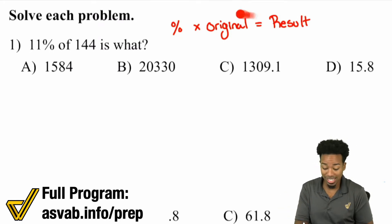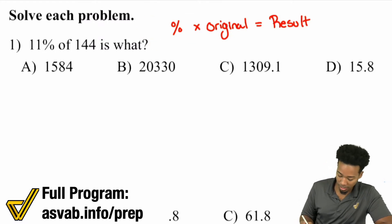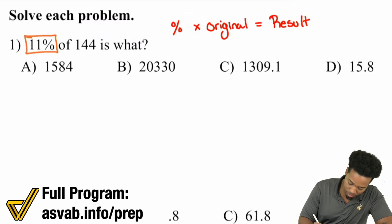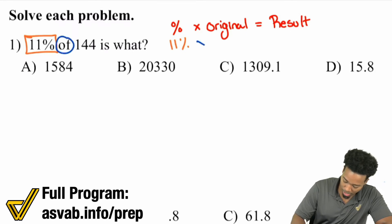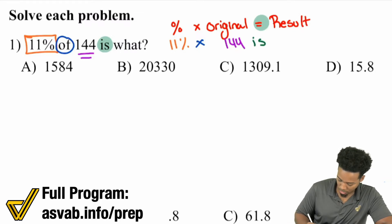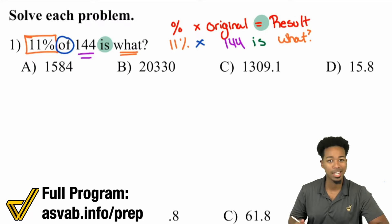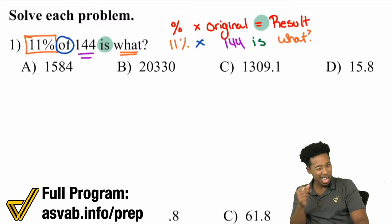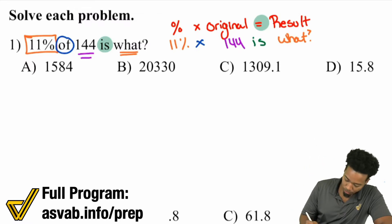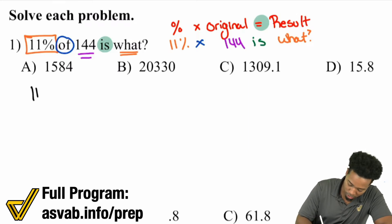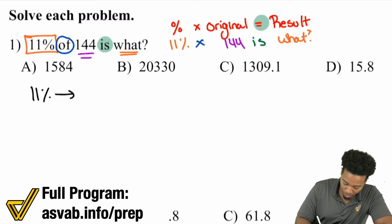So filling in the details: we have 11% — that's the percent — times 144, which is the original number, equals what, which is the result. When calculating with a percent you have to turn it into a decimal. So 11% becomes 0.11 — you move the decimal point two places to the left. So you end up with 0.11 times 144 equals what.